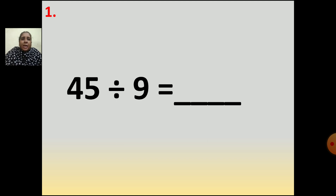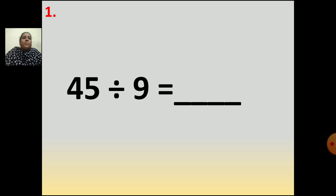9 ones are 9, 9 twos are 18, 9 threes are 27, 9 fours are 36, 9 fives are 45. So what is your answer, children? In the table of 9, when you get 45 — 5s are. So your answer is 5.